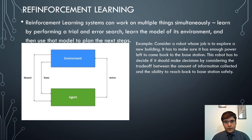Reinforcement learning systems can work on multiple things simultaneously and learn by performing a trial-and-error search. They learn a model of their environment and use that model to plan next steps. For example, consider a robot whose job is to explore a new building while ensuring it has enough power to return to the base station. The robot must decide by consulting the trade-off between the amount of information collected and the ability to reach back to base station safely — simultaneously learning and acting on the environment.